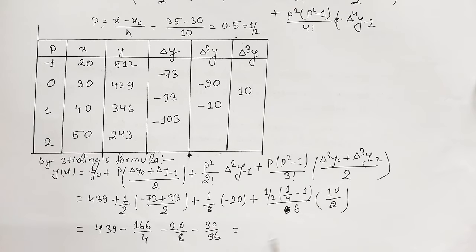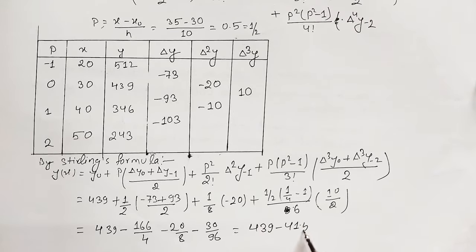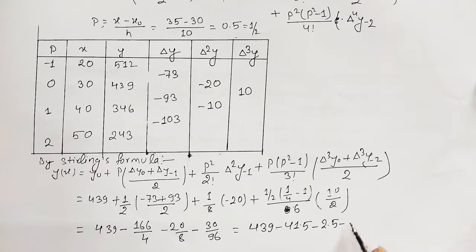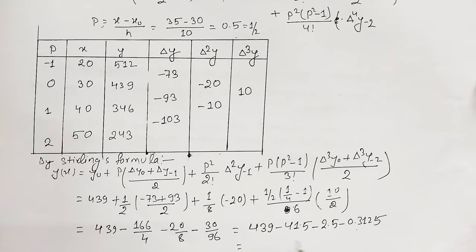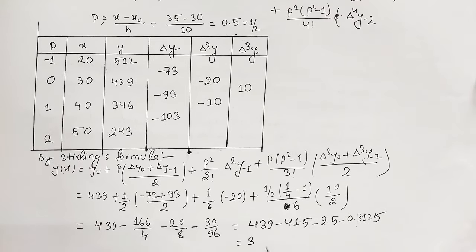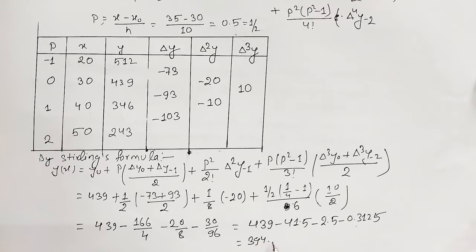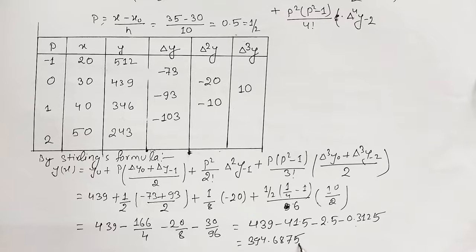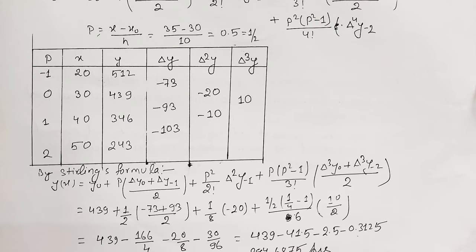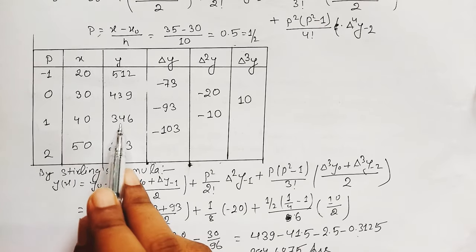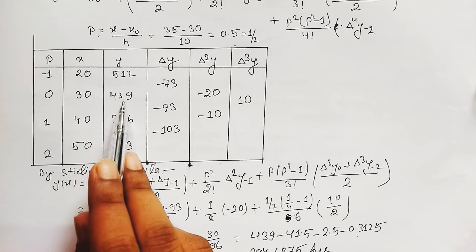Converting to decimals: 439 − 41.5 − 2.5 − 0.3125. Adding these up gives us 394.6875, and this is our final answer for F(35). We can verify that 394.6875 lies between 346 and 439, which confirms our answer is correct.